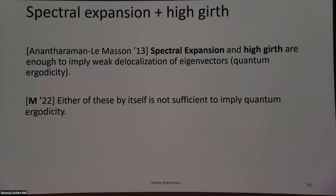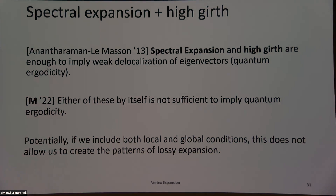The combination of spectral expansion and high girth actually implies other delocalization and randomness properties. Specifically, Anantharaman and Le Masson showed that if you have both spectral expansion and high girth, that's enough to prove a weak form of eigenvector delocalization known as quantum ergodicity. And in fact, each of these by itself is not enough — you strongly need both.